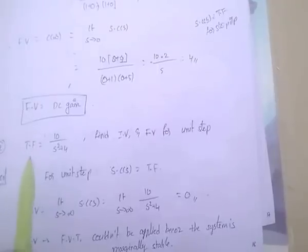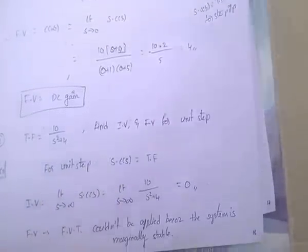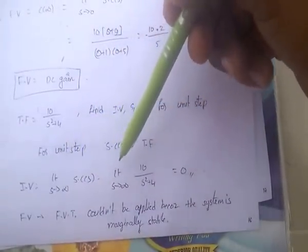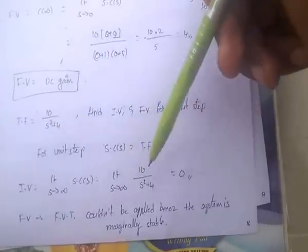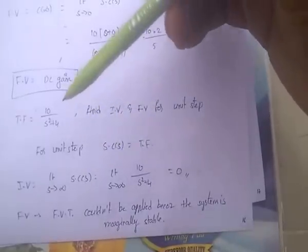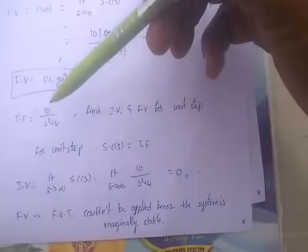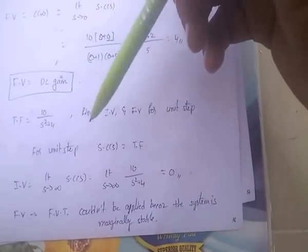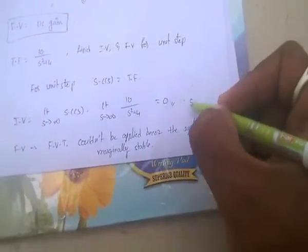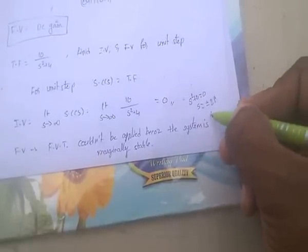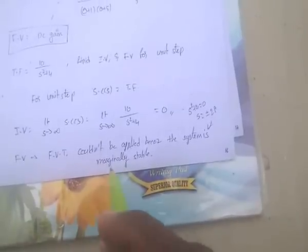Another problem: Transfer function = 10/(s²+4). Find initial and final value for unit step. For the initial value, limit s→∞ of 10/(s²+4) = 0. For the final value, note that s²+4=0 gives roots s = ±2i, so this is a marginally stable system. Therefore, the final value theorem cannot be applied to this system.